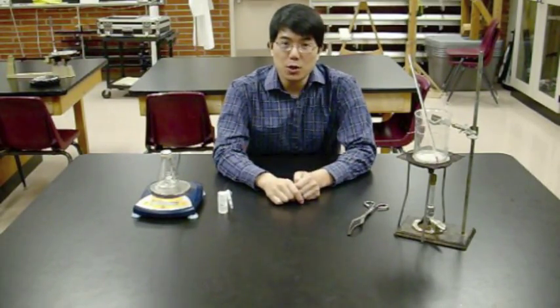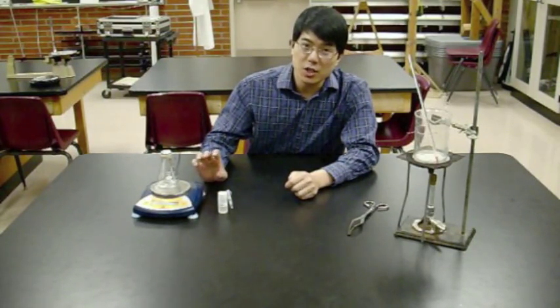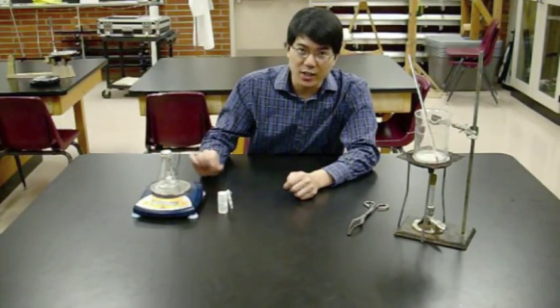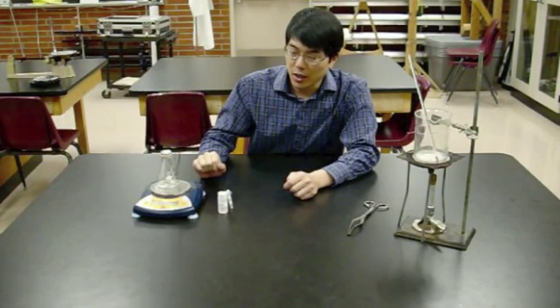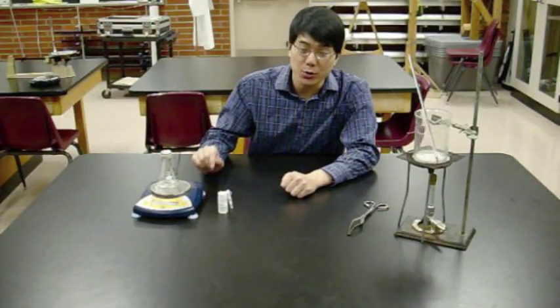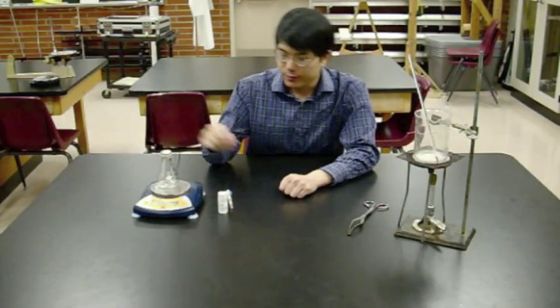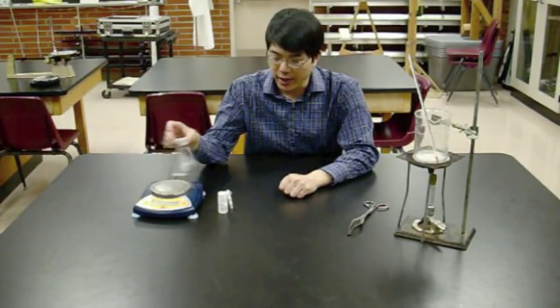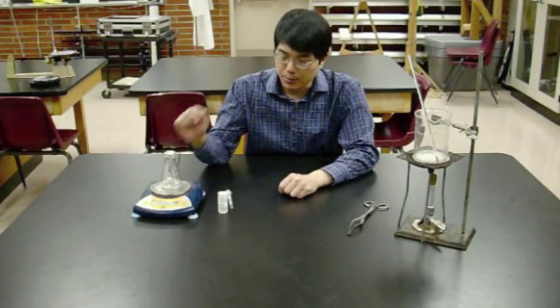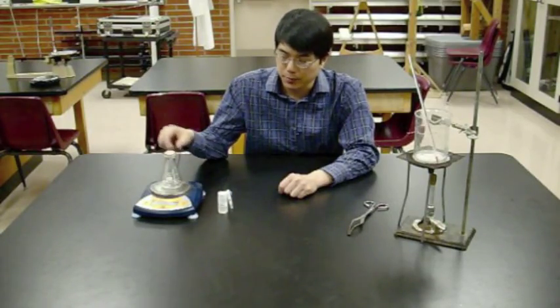Weigh your Dumas tube on an electronic balance. You want the added accuracy because you're looking at very low changes in mass. You have to get a mass measurement before you put any unknown in there. Otherwise, you'll never be able to analyze your data. This first measurement is just your Dumas tube full of air, no vapor, no unknown.